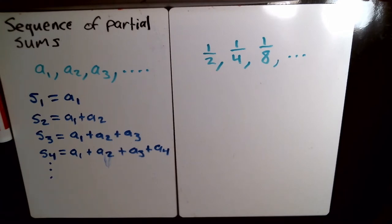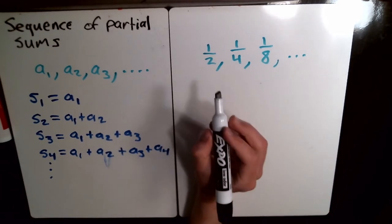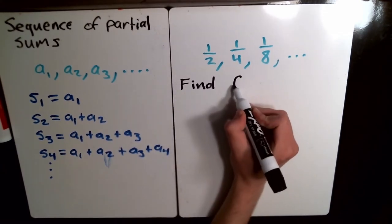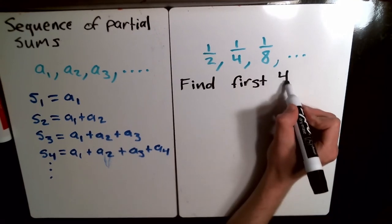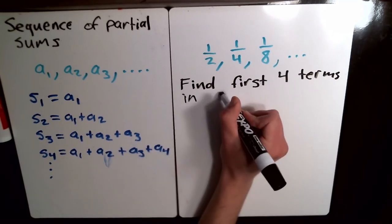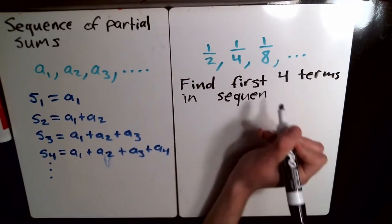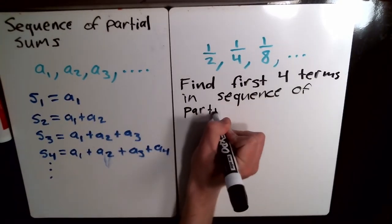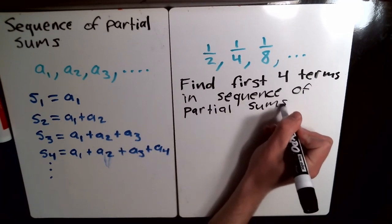On the homework, you're going to find the first six terms in the sequence of partial sums. On this one, I'm just going to do the first four terms. Because this one has fractions, so it gets a little bit nastier than the ones you're doing. But let's find first four terms partial sums in the sequence of partial sums.